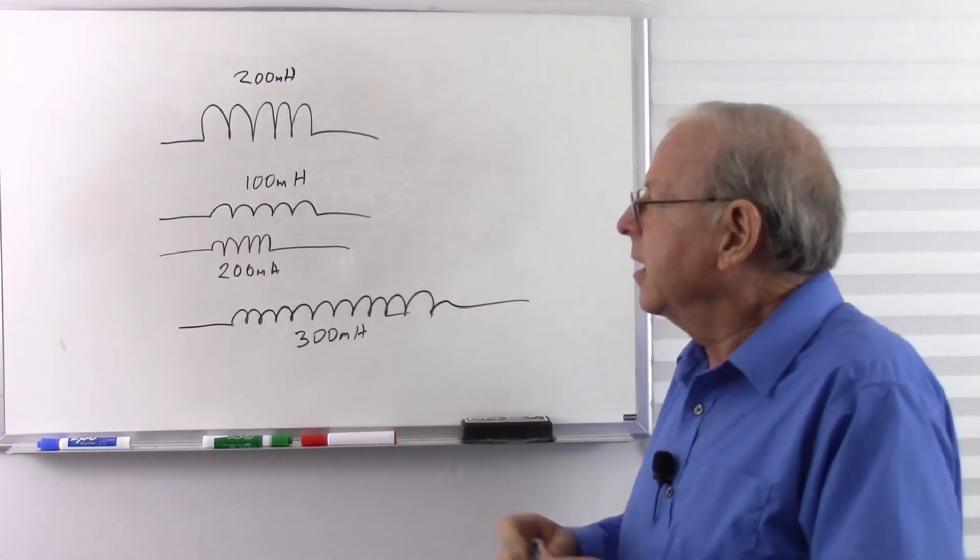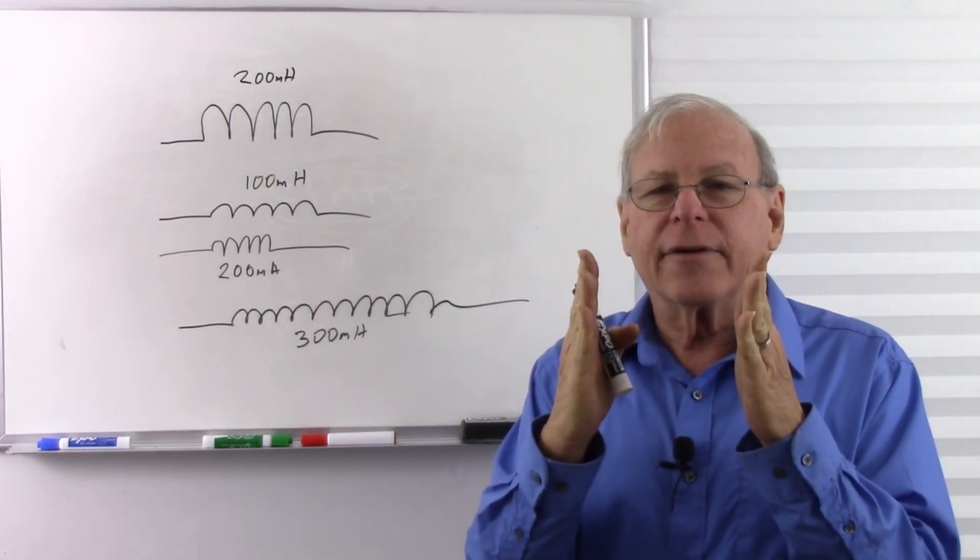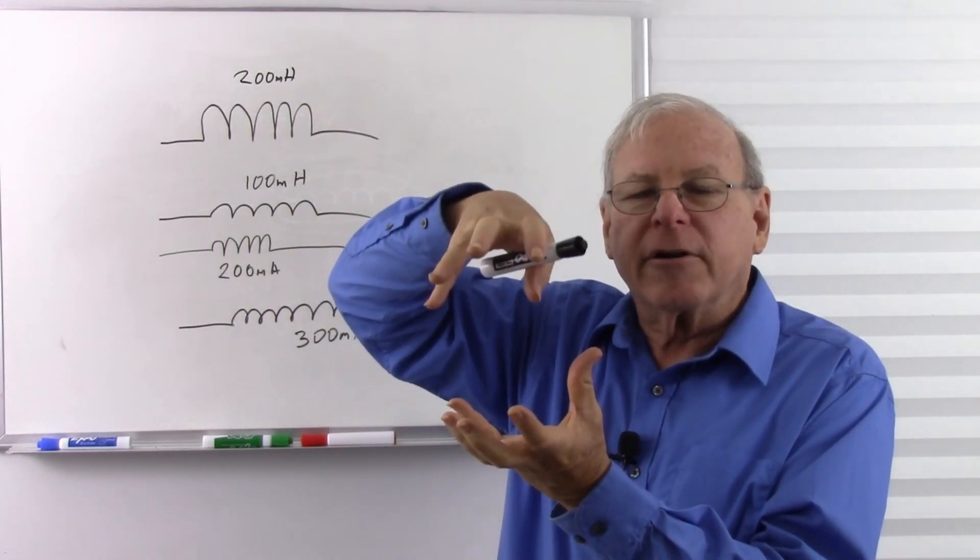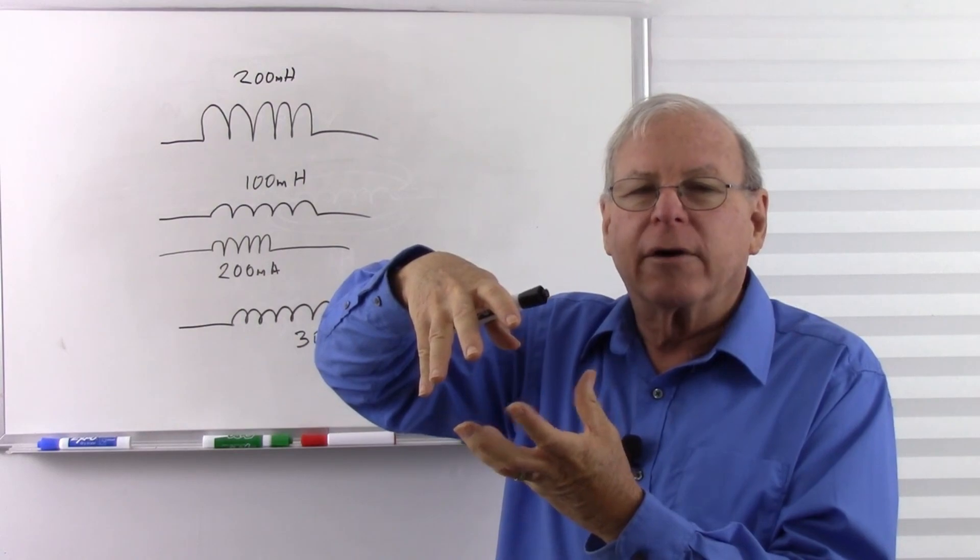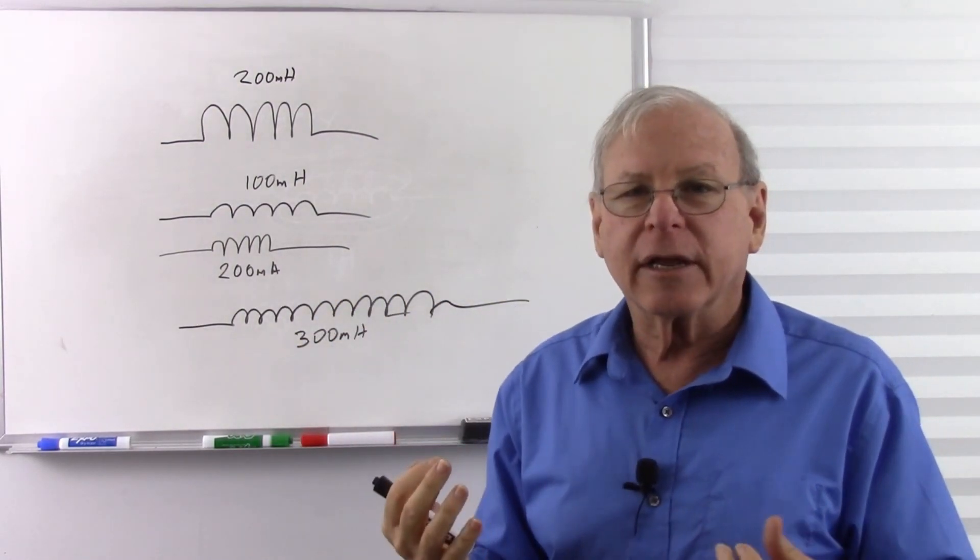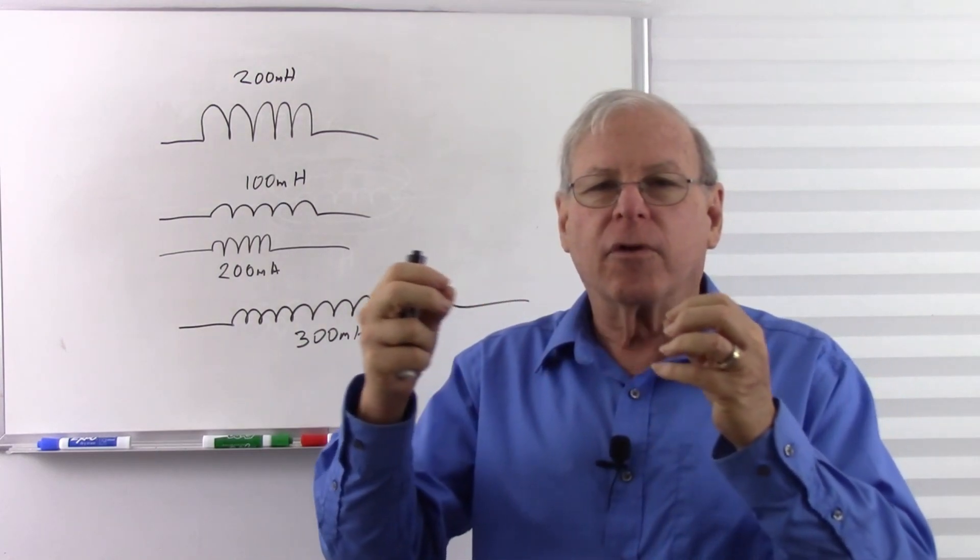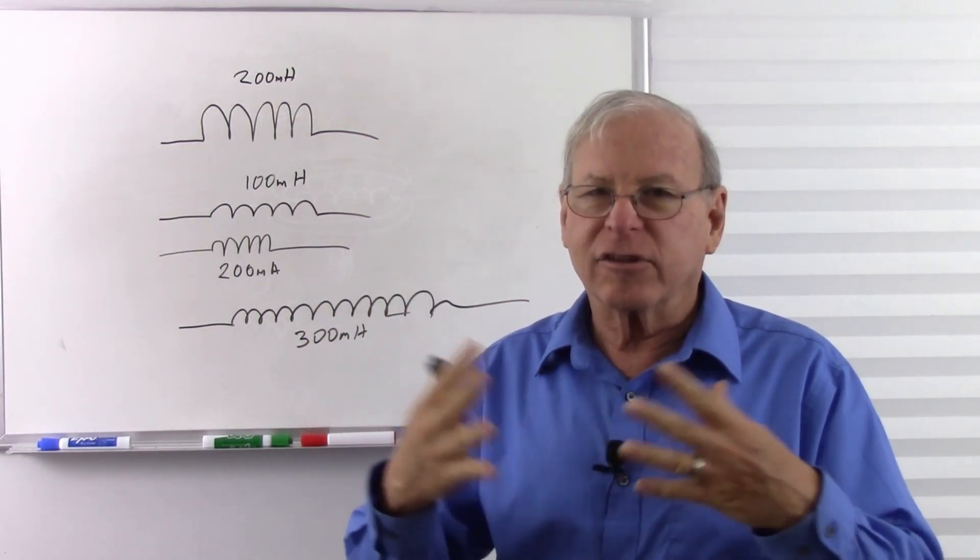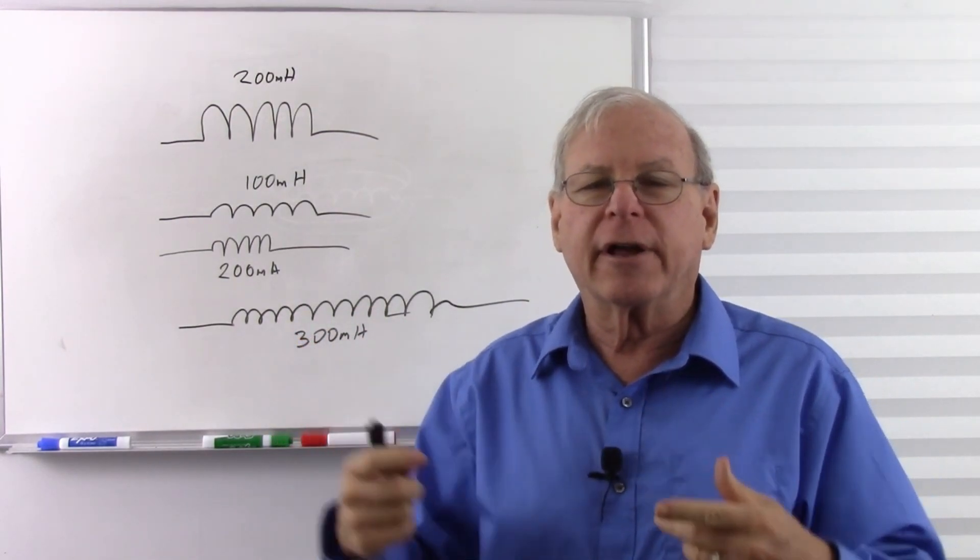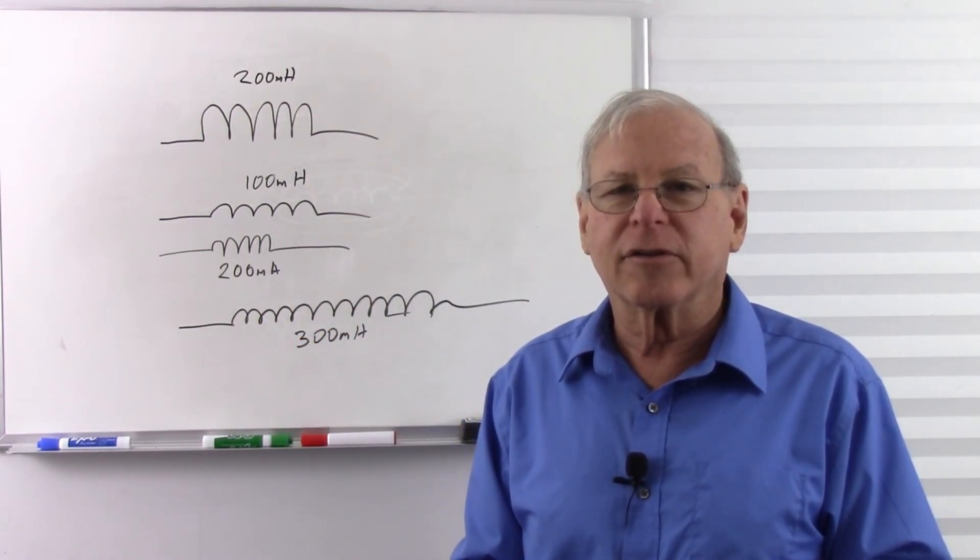So putting the wires closer together gives me more inductance. Making the coil bigger diameter, which simply adds more wire, more inductance. Add more turns, more inductance. But if I make the turns further apart, less inductance, less interaction. And if I use bigger diameter wire, that forces the turns further apart, so bigger diameter wire gives me less inductance.